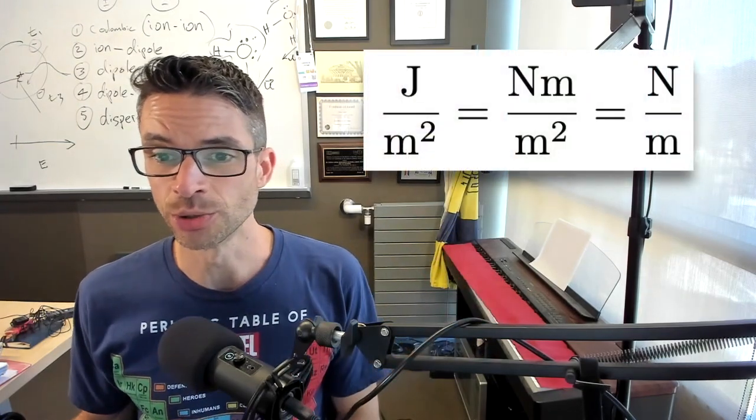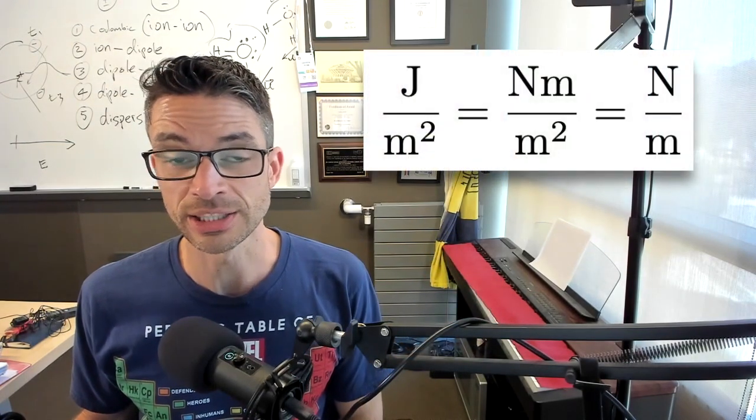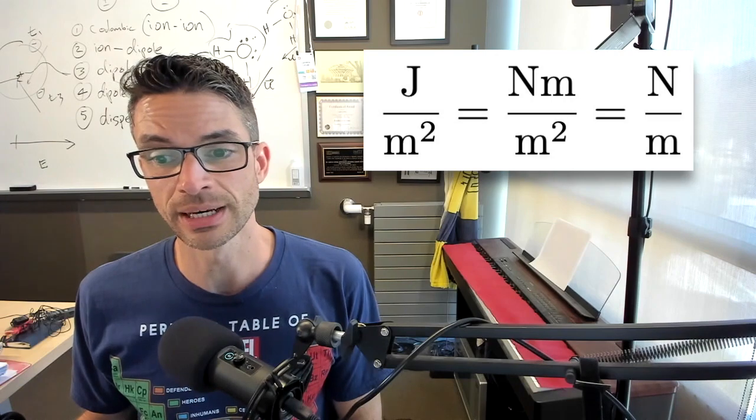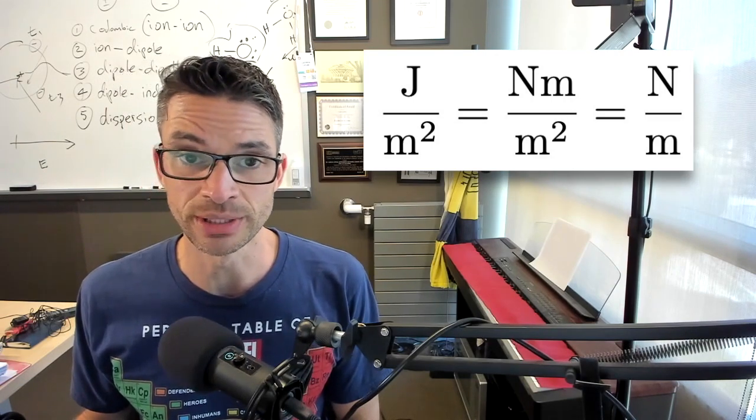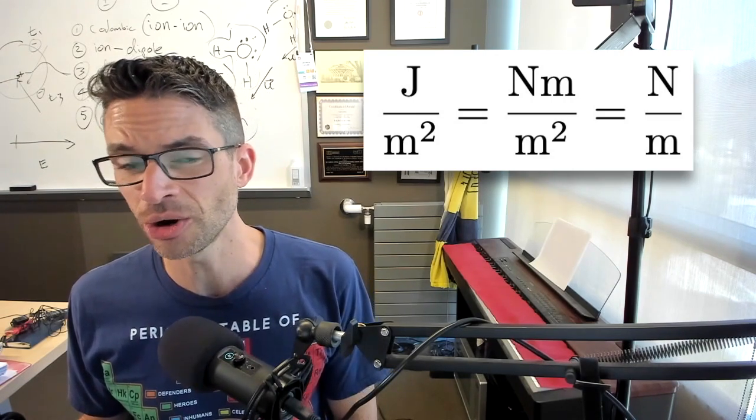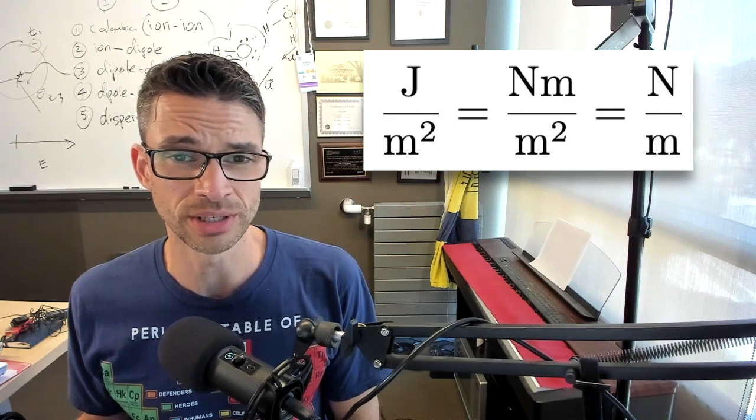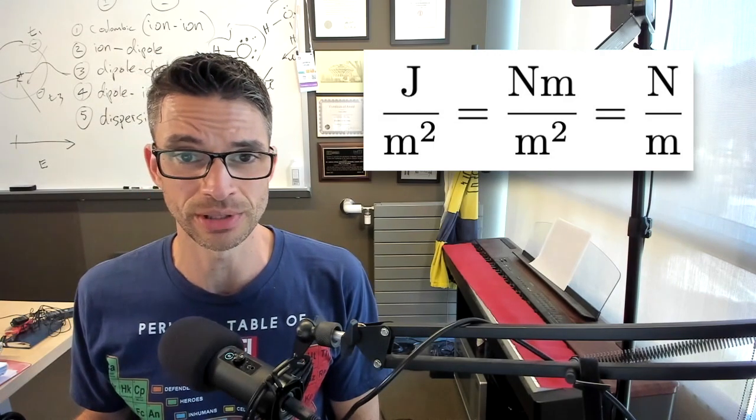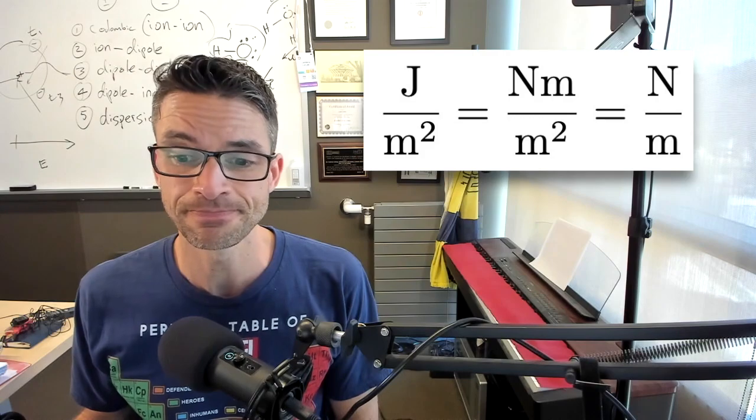So in energy you have joules per square meter, but for surface tension you have newtons per meter. You can show that those units are equivalent, but really conceptually they mean something a bit different.